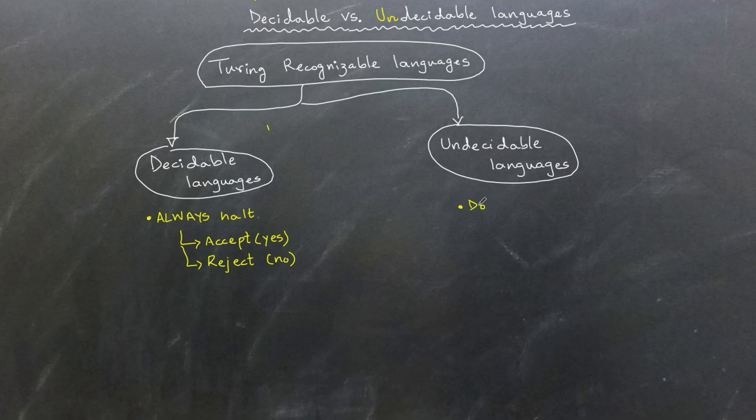On the other hand, undecidable languages are those for which no Turing machine can guarantee a halt with a decision for every possible input. This means for some inputs, the Turing machine loops forever without ever accepting or rejecting.